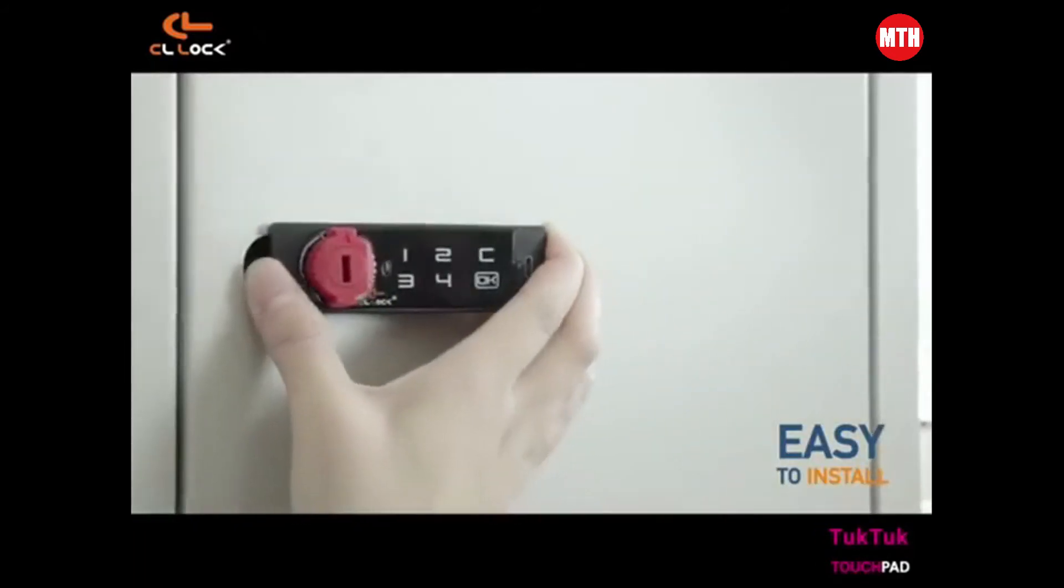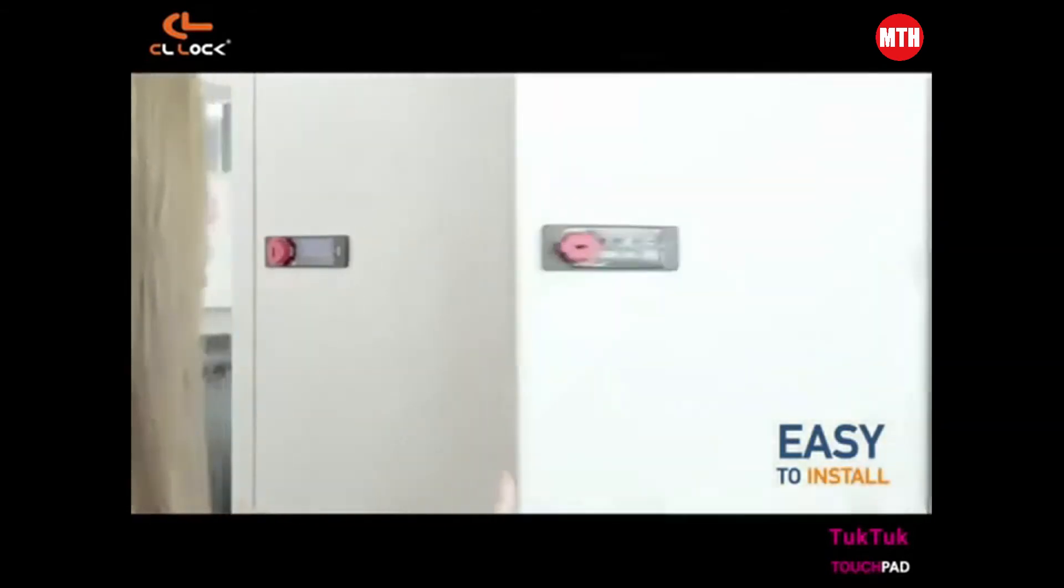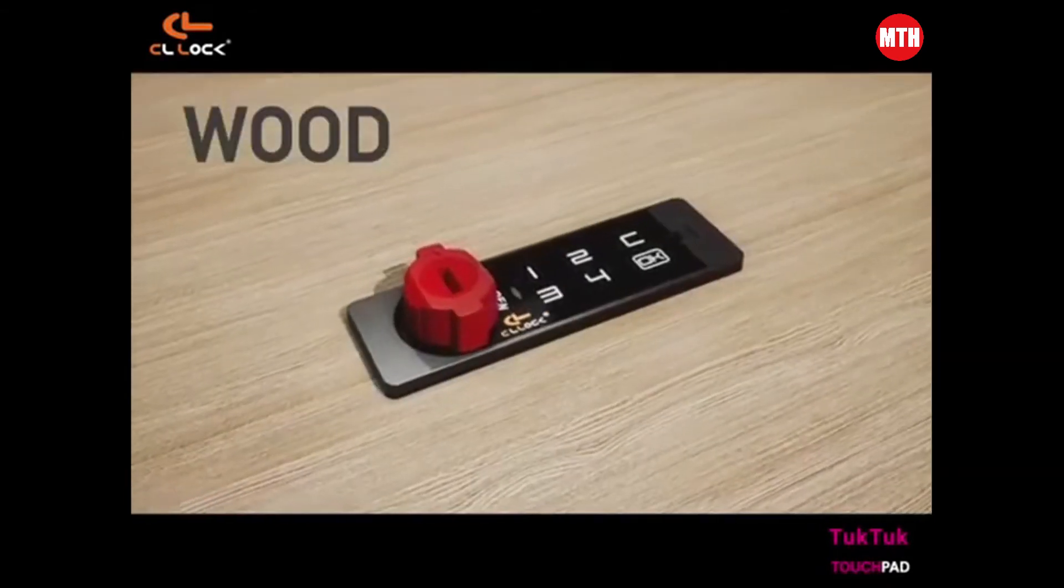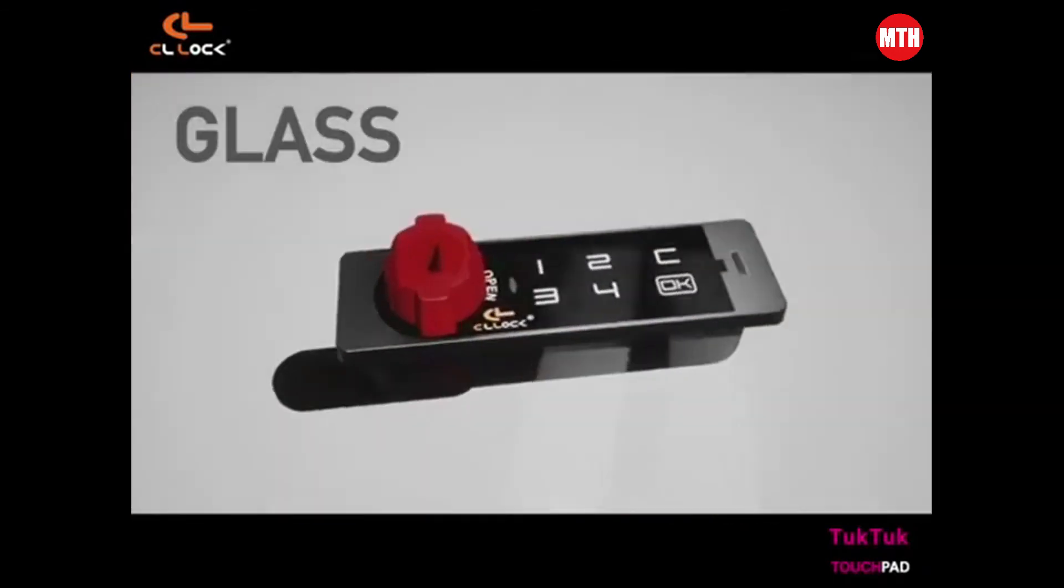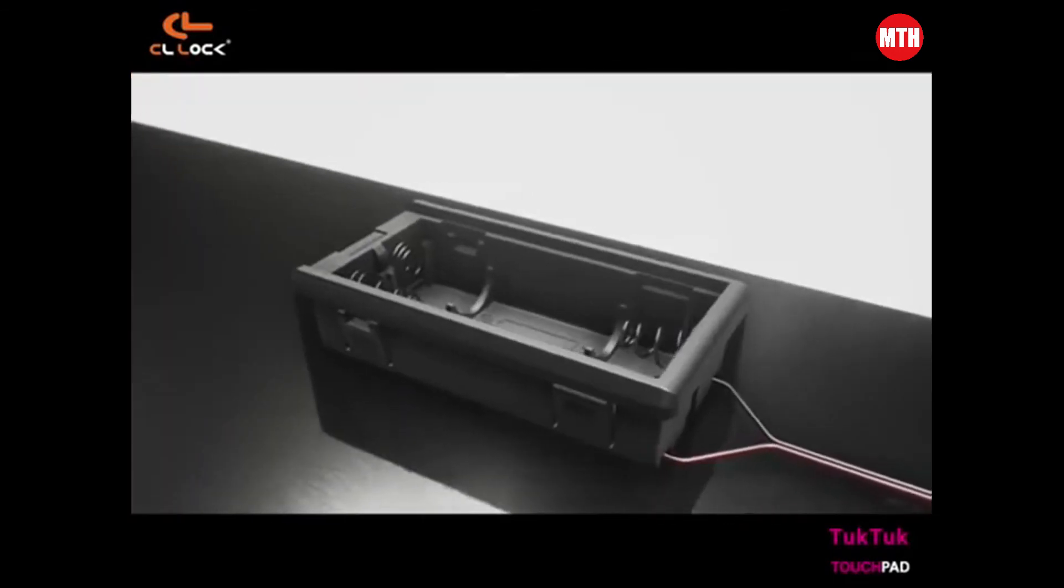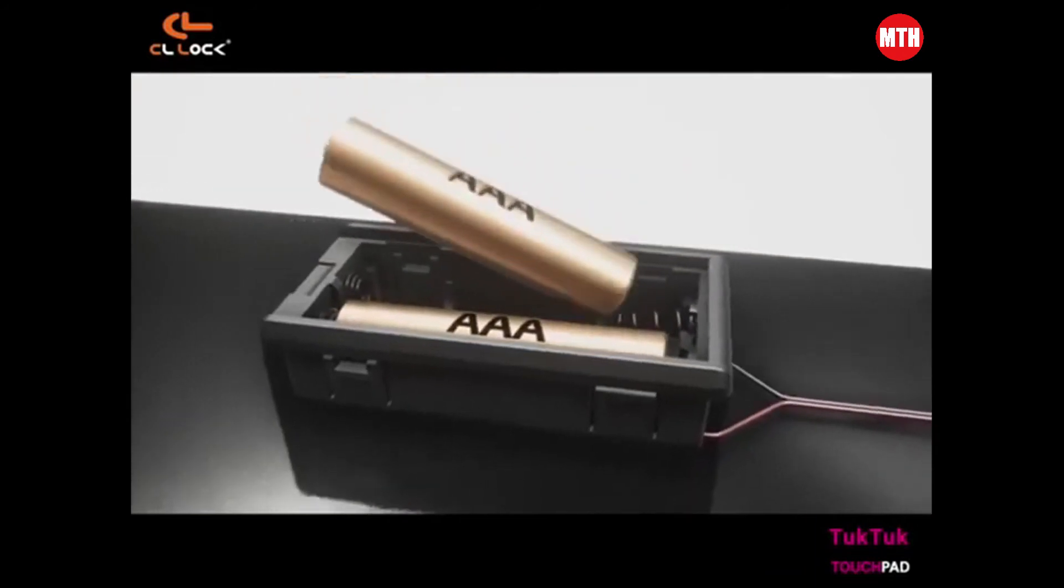TukTuk CL-Lock can be easily installed on a variety of surfaces, whether it be wooden furniture, steel furniture, and glass furniture. Using only two AAA batteries which can be adhered on surface by magnet or two screws.